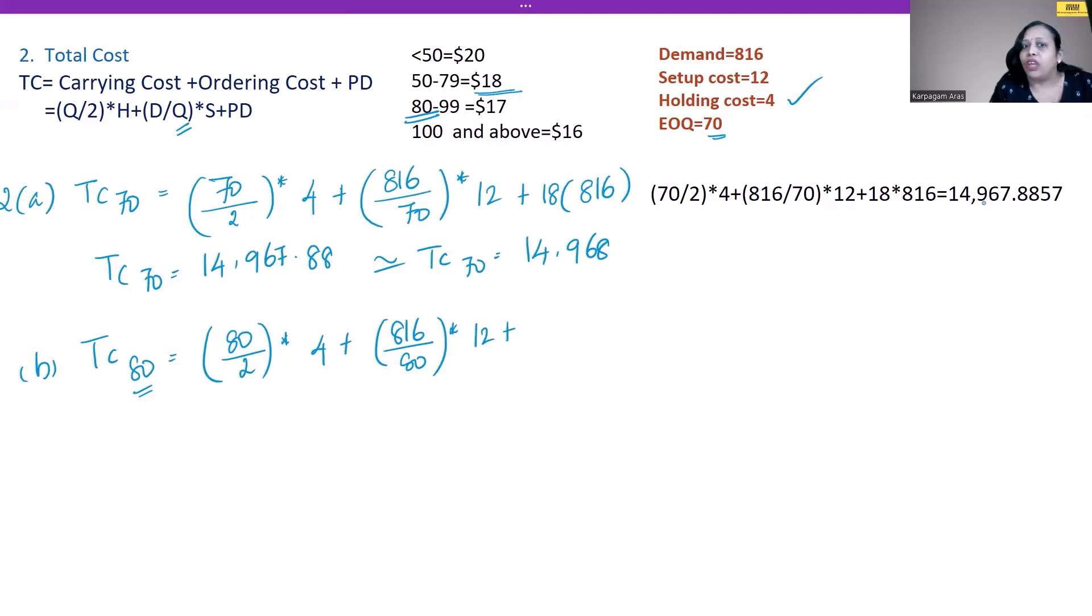Again, here the Q changes. That quantity is 80 at this point, multiplied by the setup cost. Plus, what is the price point? Here the price point has changed from $18 to $17. Higher the quantity, lesser the price. So $17 × 816 demand gives us 14,154. So TC at 80 is 14,154.